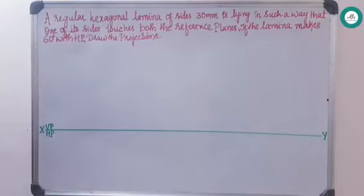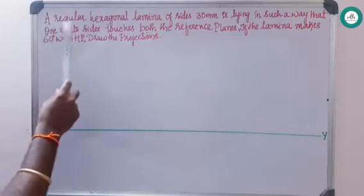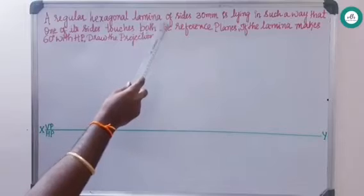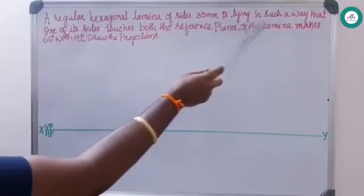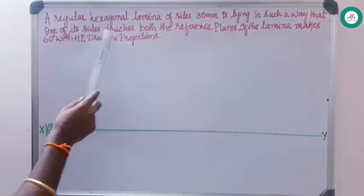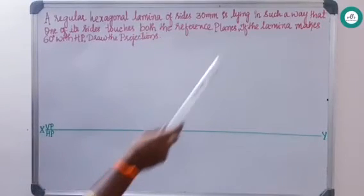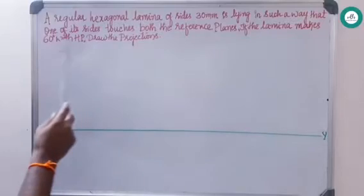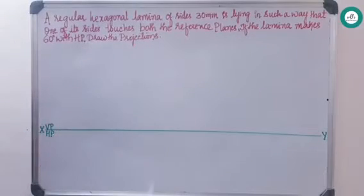Today we will look at an alternate solution for the same hexagonal problem. A regular hexagonal lamina of sides 30 mm is lying in such a way that one of its sides touches both the reference planes. The lamina makes 60 degrees with HP — draw the projections.